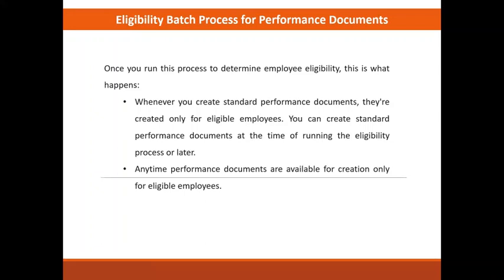By default, those with the performance management administration duty and performance management implementation duty can run the batch process. The batch process evaluates the worker population for a specific performance document and selects those workers who are eligible based on the eligibility profile criteria. The eligibility profile used to determine eligibility for a performance document are those associated with the performance document period in the performance template. The eligibility batch process determines eligibility for active as well as suspended assignments of the entire worker population.